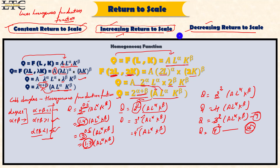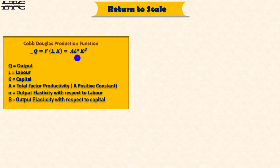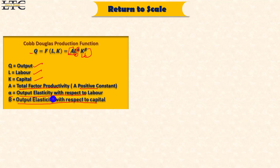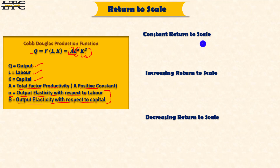This is a summary of Cobb-Douglas production function. In revision: Cobb-Douglas production function Q equals A · L^alpha · K^beta, where A is total factor productivity (also called multi-factor productivity) and is constant. L is labor, alpha is output elasticity with respect to labor (constant). K is capital, beta is output elasticity with respect to capital (constant). We have three cases: constant return to scale, increasing return to scale, and decreasing return to scale.